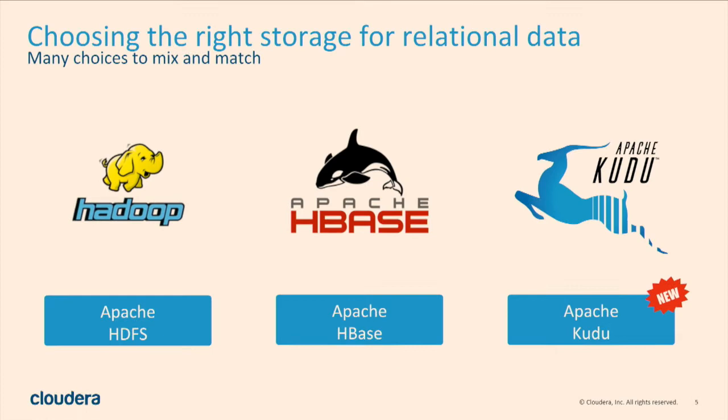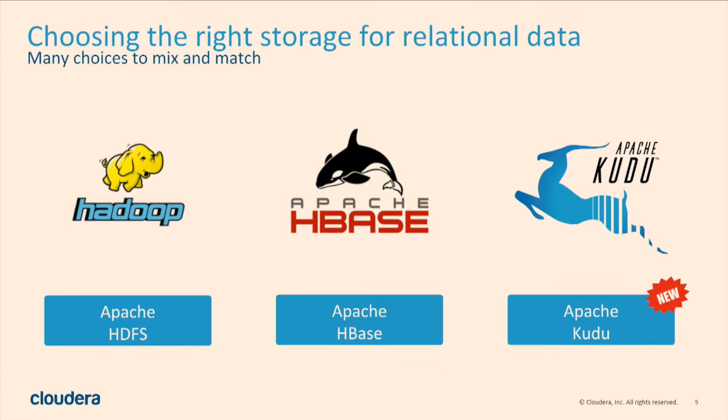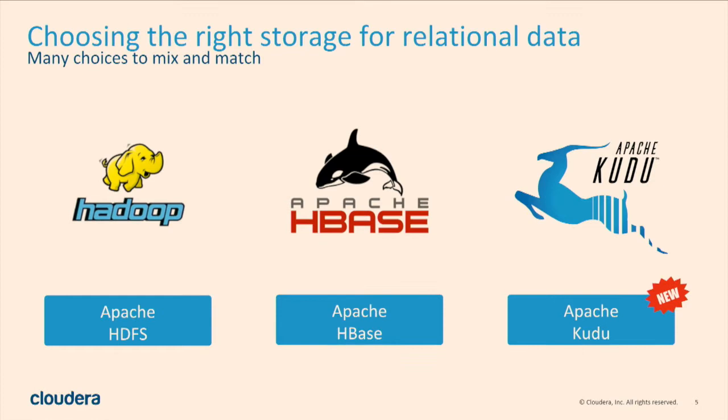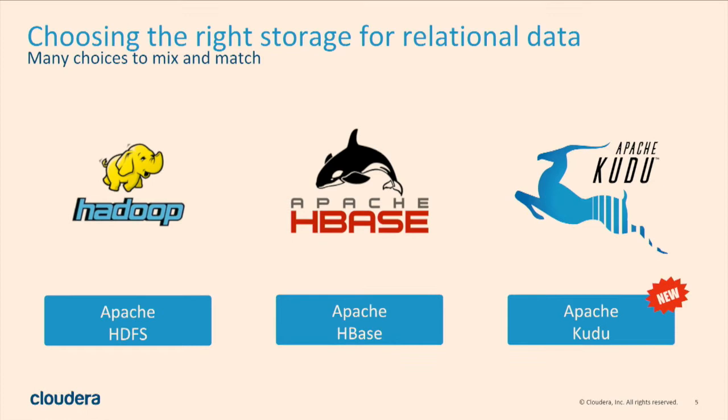Relational data is not new to the Hadoop ecosystem. You can store this kind of data in many different storage options. Traditionally we had two options: Hadoop HDFS, founded around 2006-2007, and Apache HBase, founded a couple years later around 2009. The newest option we'll talk about today is Kudu — giving us three different options for storing data in Hadoop.